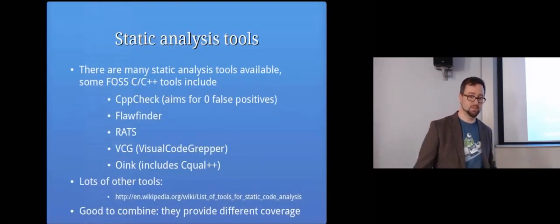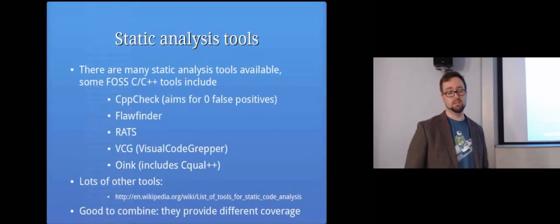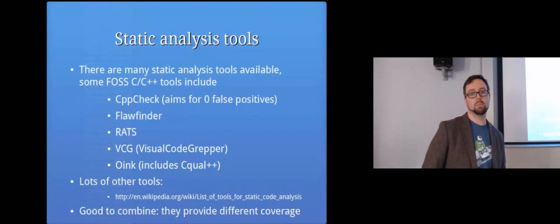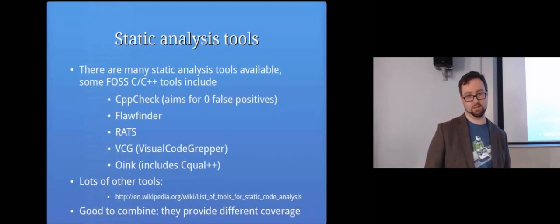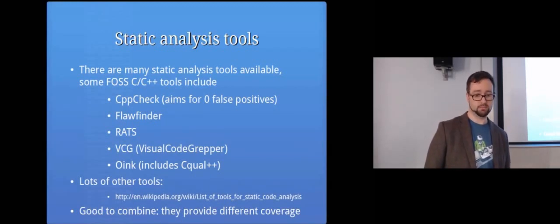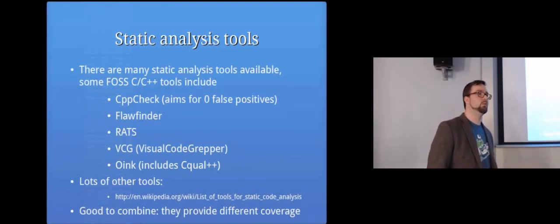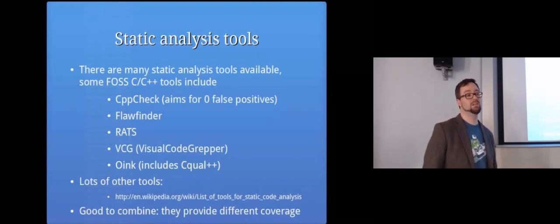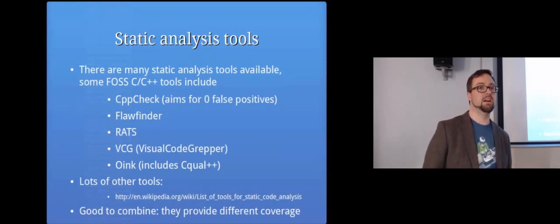There are lots of static analysis tools — some open source, others proprietary. Good free tools include cppcheck, which aims for zero false positives; flawfinder; RATS; Visual Code Grepper; and OINK, which includes a static analysis tool. There are many more — there's a Wikipedia link you can look at. Because tools do things differently, it's a good idea to combine them and run more than one. As a side note for your assignment, running static analysis first can give you ideas for what to look at in your fuzz testing.